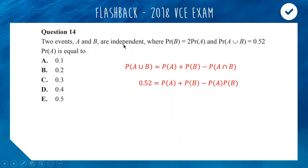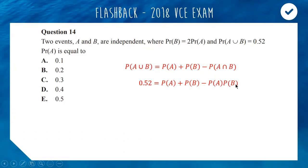Remember, independent events are events which don't affect each other's outcome. Rolling a die and flipping a coin are independent because they don't affect each other. So now we're going to write probability of B as 2 times probability of A, changing this to 2PA. We change this to 2PA as well, so you get 2PA squared.